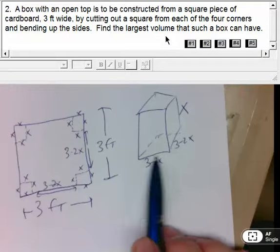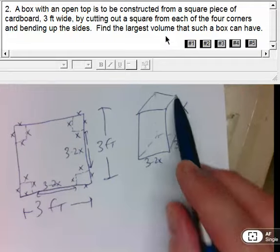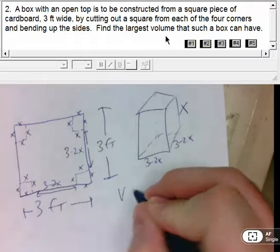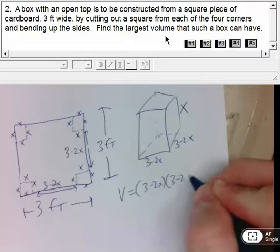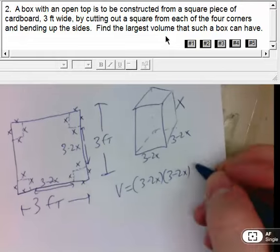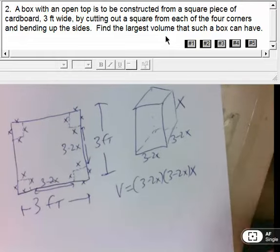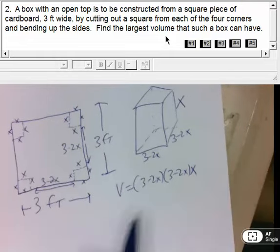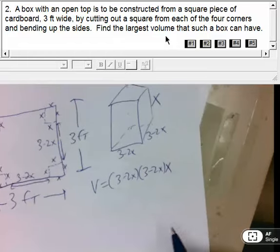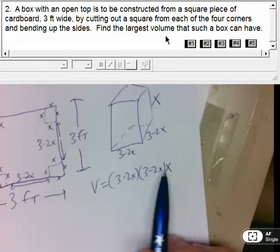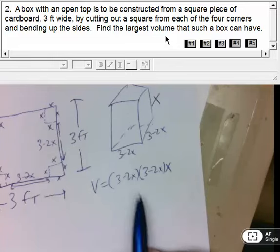My dimensions are 3 minus 2X by 3 minus 2X by X. So my volume is going to be (3 minus 2X) times (3 minus 2X), or (3 minus 2X) squared, times X. That's what we're trying to maximize. So I need to find the derivative and critical values. This one seems pretty easy to do by hand, so I'm just going to do it by hand.